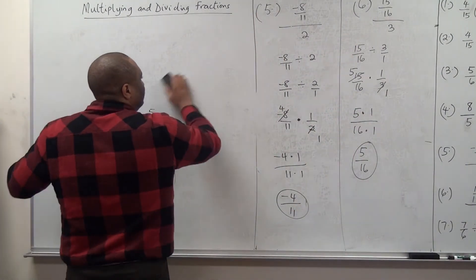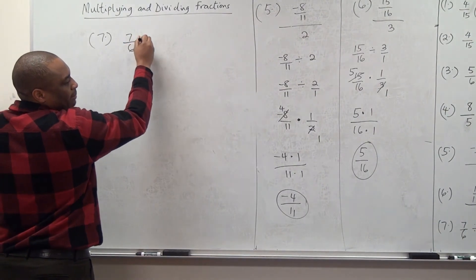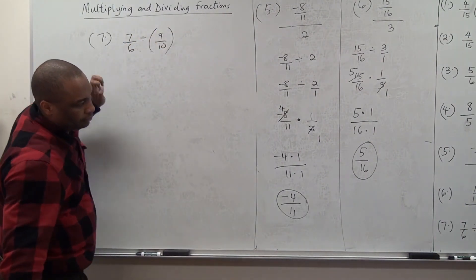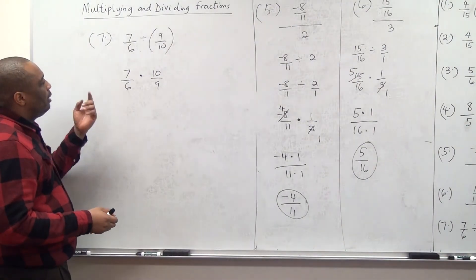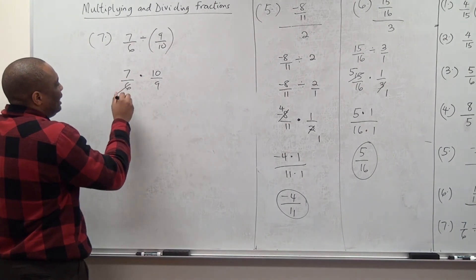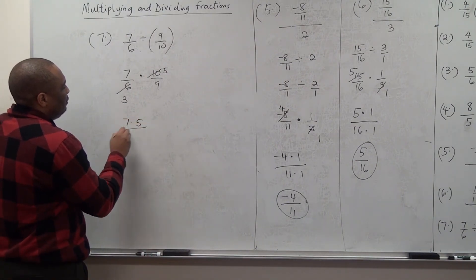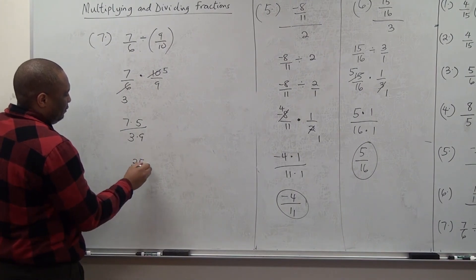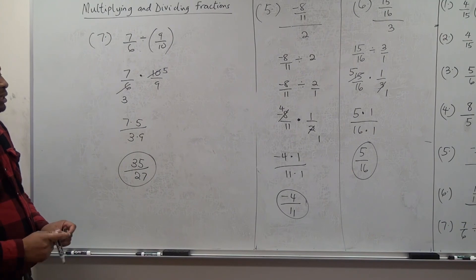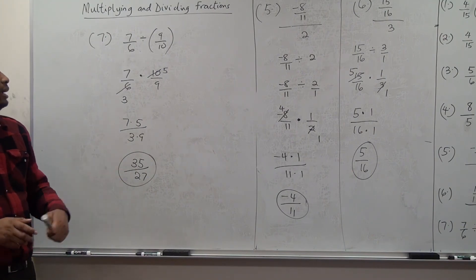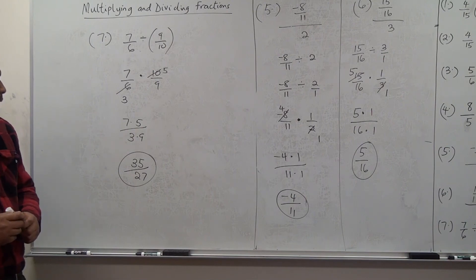The last example, Number 7: 7 over 6 divided by 9 over 10. This gives 7 over 6 times 10 over 9. Can we simplify? Yes: 2 divides 6 is 3, 2 divides 10 is 5. No further simplification. So this is 7 times 5 over 3 times 9, giving 35 over 27. You can leave your answer as an improper fraction, or if your instructor requires a mixed number, it gives you 1 whole number and 8 over 27.